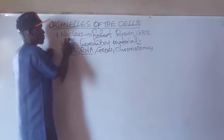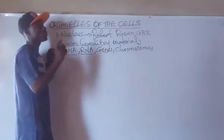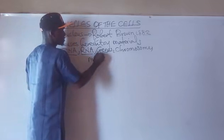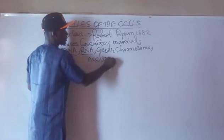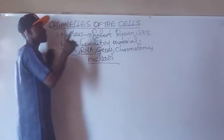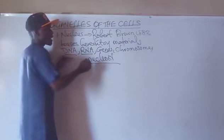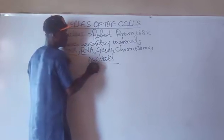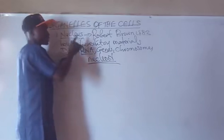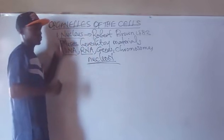In our previous class, I told you guys that prokaryotes lack a well-defined Nucleus — instead they have a Nucleoid. So the genetic materials of a prokaryote are found in the Nucleoid and not the Nucleus, because they lack a well-defined Nucleus.